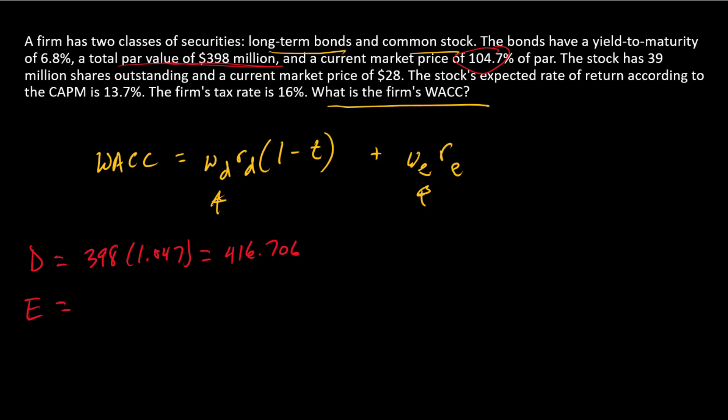Similar calculation for equity. What's the market value of the equity? Well, the equity, we have a market price of $28 per share and 39 million shares outstanding. So 39 times 28 equals 1092.